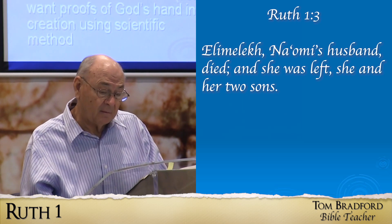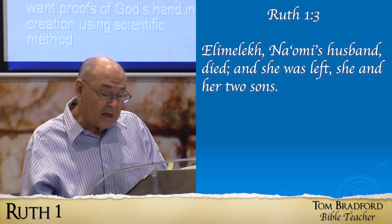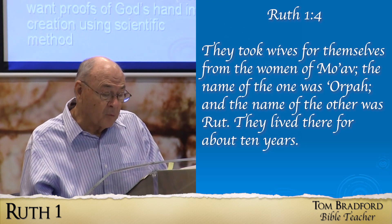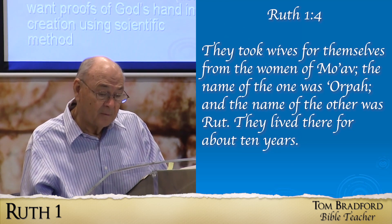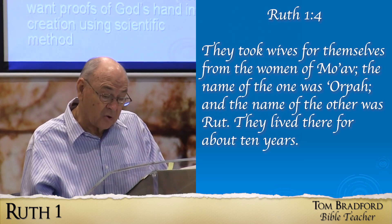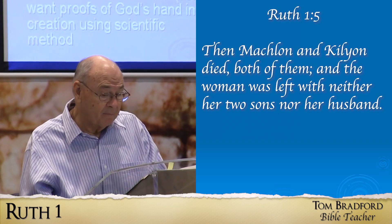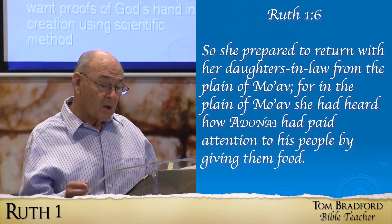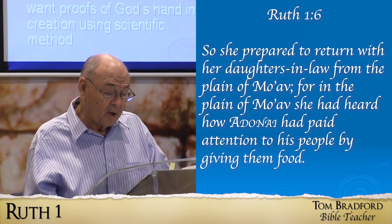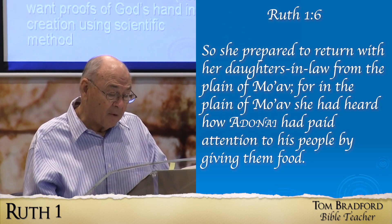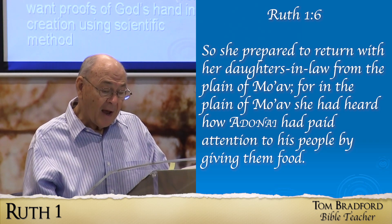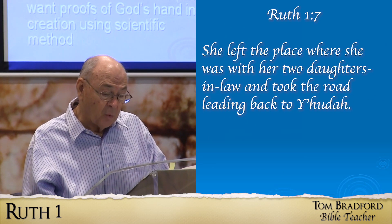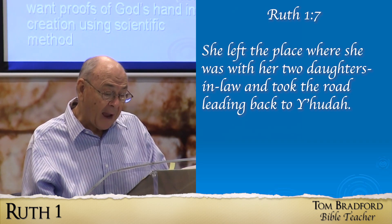'Elimelech, Naomi's husband, died, and she was left with her two sons. They took wives for themselves from the women of Moab. The name of one was Orpah, the other was Ruth. They lived there for about ten years. Then Mahlon and Kilion died, both of them, and the woman was left with neither her two sons nor her husband. So she prepared to return with her daughters-in-law from the plain of Moab. For in the plain of Moab she had heard how Adonai had paid attention to his people by giving them food. She left the place where she was and took the road leading back to Judah.'